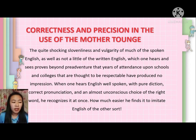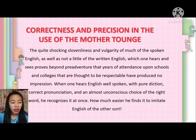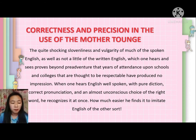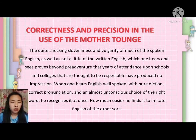When we say correctness, it is the quality or state of being free from error — meaning, once you speak, it is needed that the choice of your word is always correct or free from error. And precision is the quality, condition, or fact of being exact and accurate.